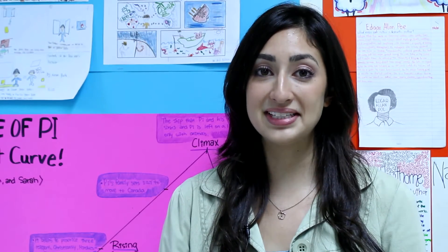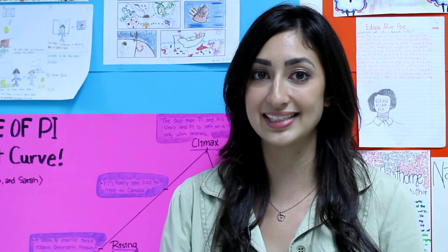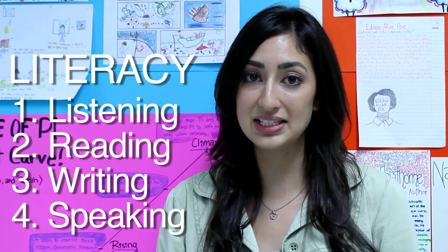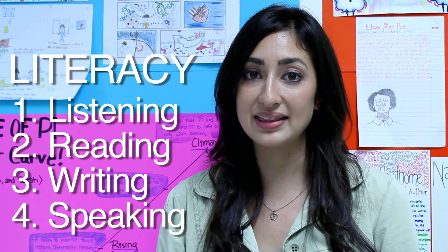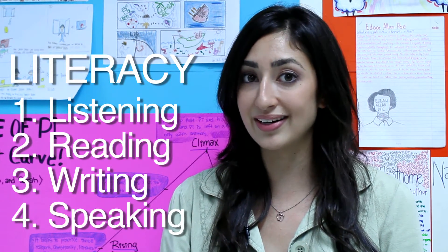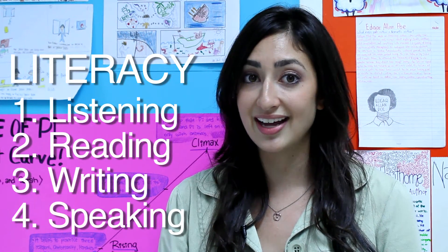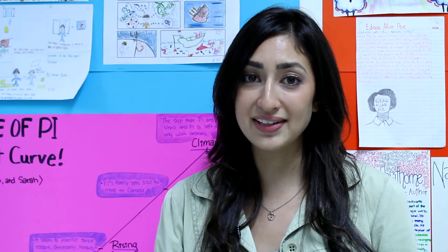Throughout this unit in American Romanticism, students were exposed to a variety of literature and literary techniques. Using the four components of literacy in this unit made the lessons rewarding and engaging, and it allowed the students to feel a sense of pride and ownership over their work. That's a great thing. I hope you guys can find a way to join me. I hope you enjoyed the lesson.